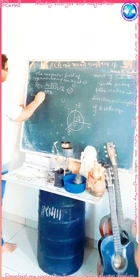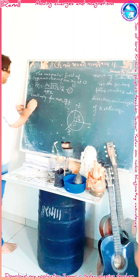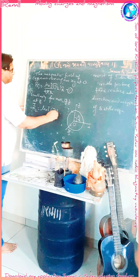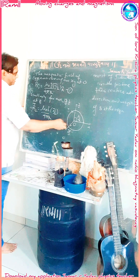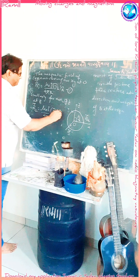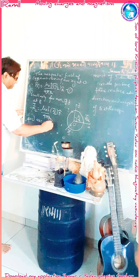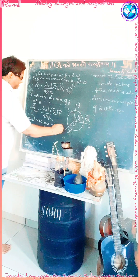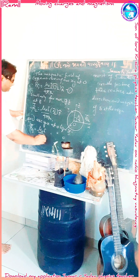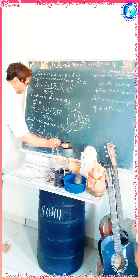Similarly, for the y-z arc, B₂ = μ₀ i (π/2) / (4π r), and its direction is along the x-direction, so we write it as î. For the z-x arc, B₃ = μ₀ i (π/2) / (4π r), and its direction is along the y-direction, so we write it as ĵ.